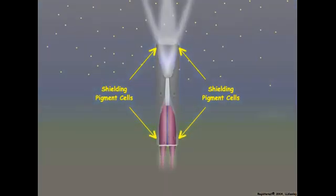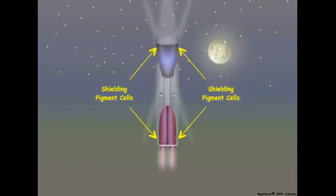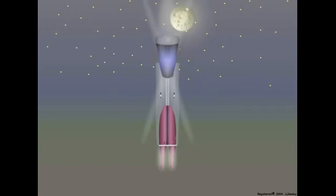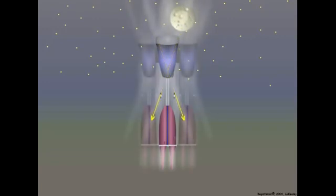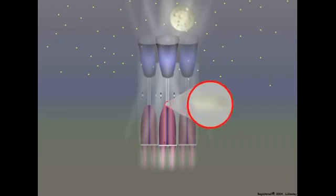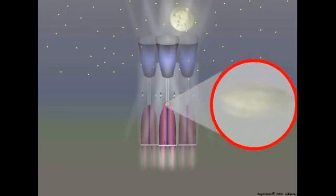However, as night approaches and the intensity of light decreases, the shielding pigments of scotopic ommatidia contract upward toward the distal end of the secondary pigment cells. Distal contraction of the shielding pigments in scotopic ommatidia opens the basal portion of the pigment cells so that light entering the dioptric apparatus of one ommatidium can pass through that ommatidium and strike the rhabdomes in adjacent ommatidia. In this manner, scotopic ommatidia interact cooperatively to form multiple superimposed images on the rhabdomes of neighboring ommatidia.